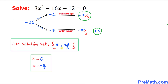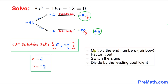Our solution set turns out to be 6 and negative 2 thirds — we can also write it in this form as well, it's up to you. Let's recap our steps once again. The very first step was to multiply the end numbers and create a rainbow. The second step was to factor that number. Then we changed the signs of the factors and finally divided those numbers by the leading coefficient.